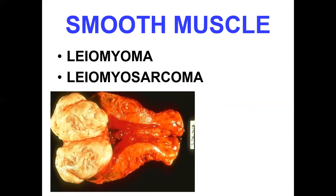Now for smooth muscle tumors: the benign tumor is leiomyoma, and the malignant is leiomyosarcoma. You have studied leiomyoma and leiomyosarcoma in the female genital tract, that is uterine tumors. Leiomyomas are often called fibroids, and the most common site is the uterus, although sometimes they may be seen in other sites. Leiomyosarcoma is also commonly seen in the uterine wall — the myometrium — although it can occur in vessel walls or the GI tract, wherever there are smooth muscle cells.